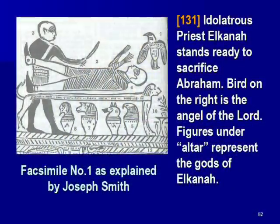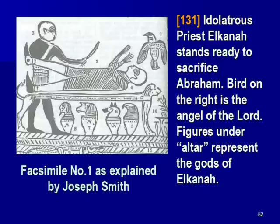And then he proceeds to give an explanation as to what these things mean. He said that this represents the idolatrous priest Elkanah, who stands ready to sacrifice Abraham — the patriarch Abraham, from which the book gets its name. The bird on the right, he says, is supposed to be the angel of the Lord. And the figures underneath this altar, he calls it, actually represent the gods of Elkanah. The problem, of course, is he gets it all wrong — he gets it absolutely wrong.